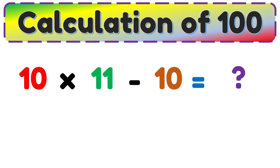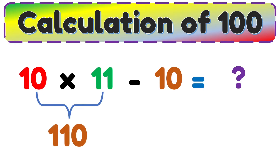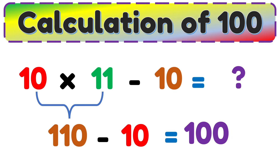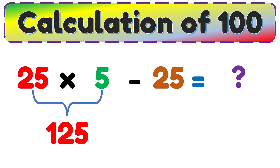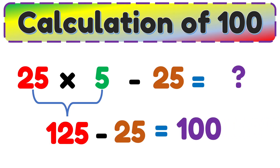10 multiplied by 11 minus 10. 10 multiplied by 11 is equal to 110, 110 minus 10 is equal to 100. 25 multiplied by 5 is equal to 125, 125 minus 25 is equal to 100.